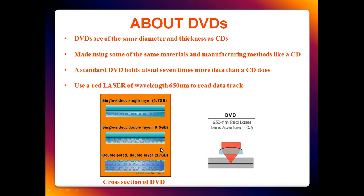Then came DVDs. DVDs are of the same diameter and thickness as CDs, almost similar in look and feel, made using similar materials and manufacturing methods. A standard DVD holds about seven times more data than a CD. It uses a red laser of wavelength 650 nanometers. A single-sided single-layer DVD holds 4.7 GB, single-sided double-layer nearly doubles that, and double-sided double-layer holds around 17 GB.